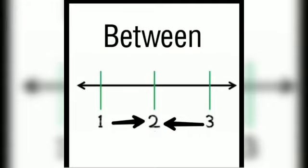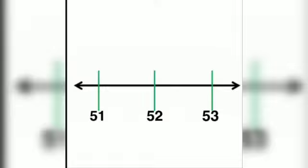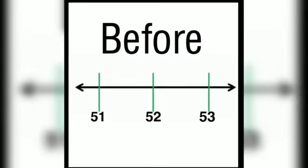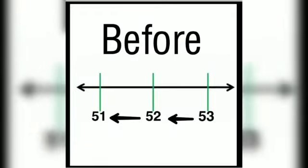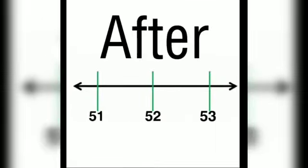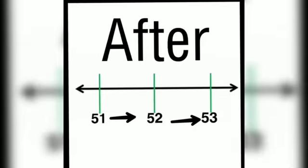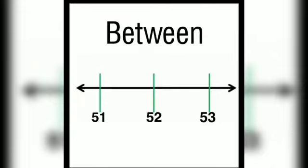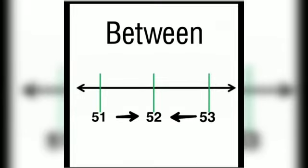Two is placed in between one and three. Next example: 52 comes before 53, and 51 comes before 52. We can also say that 52 comes after 51, and 53 comes after 52. So 52 comes in between 51 and 53.